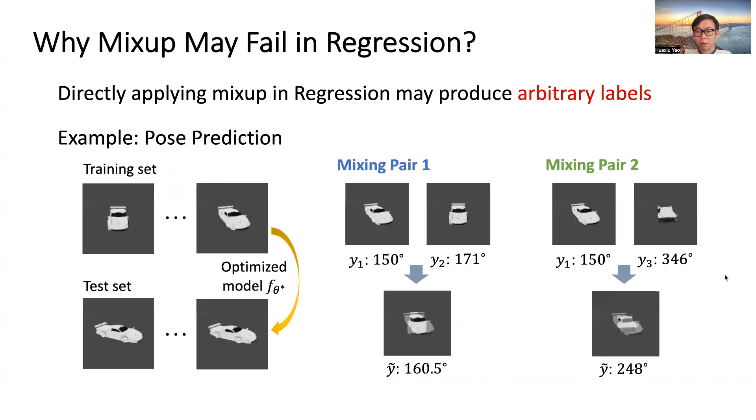In the object pose regression dataset, we randomly pick two mixing pairs, mixing pair 1 and 2. In mixing pair 1, we mix examples with labels 150 and 171 and get the mixed one with label 160.5.